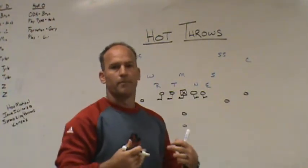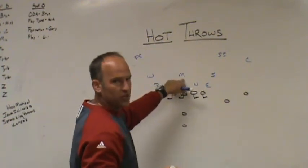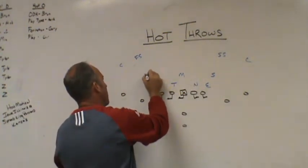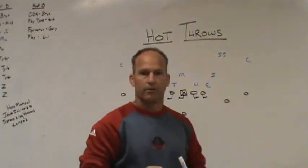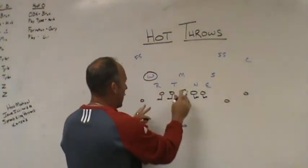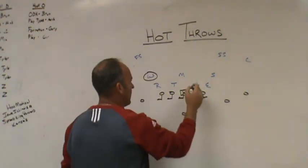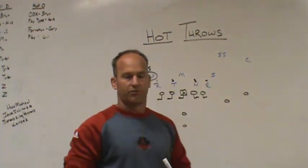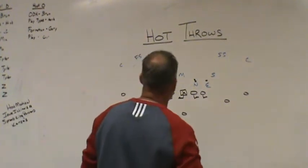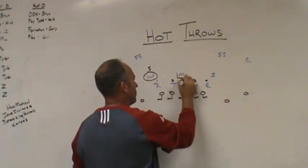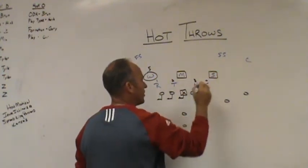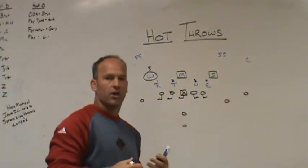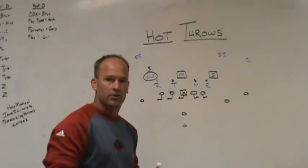We determine who the Mike is in the defense. When we throw the ball in our half-slide protection, we actually go one backer further back and declare that to be the Mike linebacker. That means my five offensive linemen account for five players — we block those four down defenders plus the Mike as the fifth. My quarterback is then responsible for the play-side inside and play-side outside linebackers. If he gets a blitz from either of those linebackers, the ball has to come out of his hand — they are not accounted for in the blocking scheme.